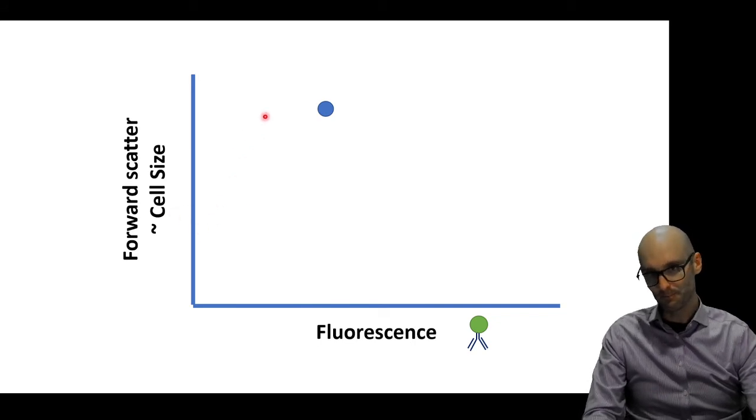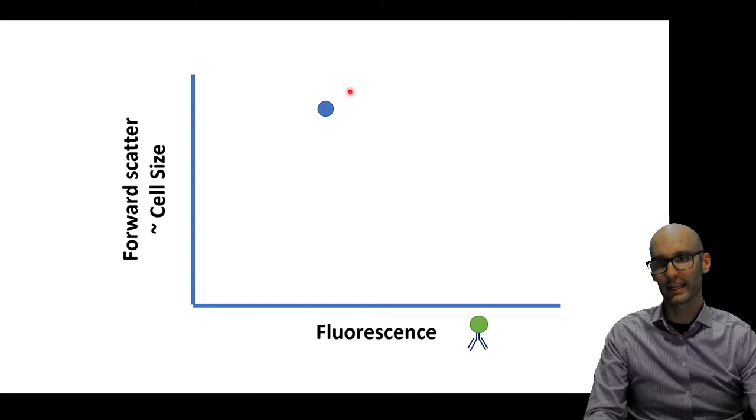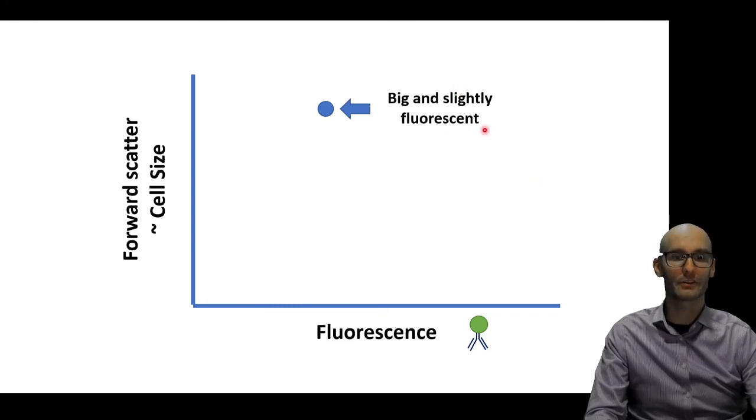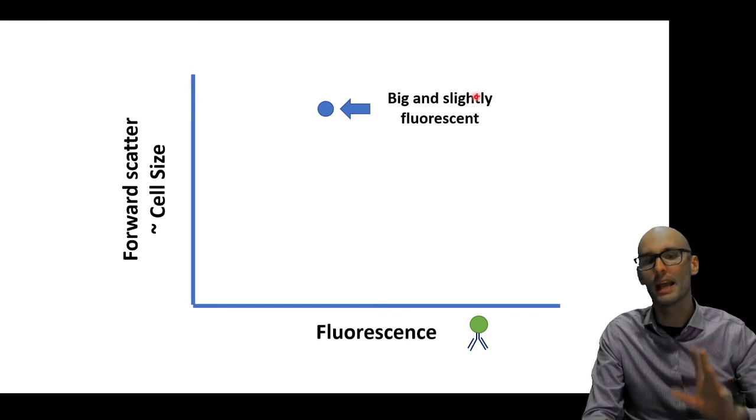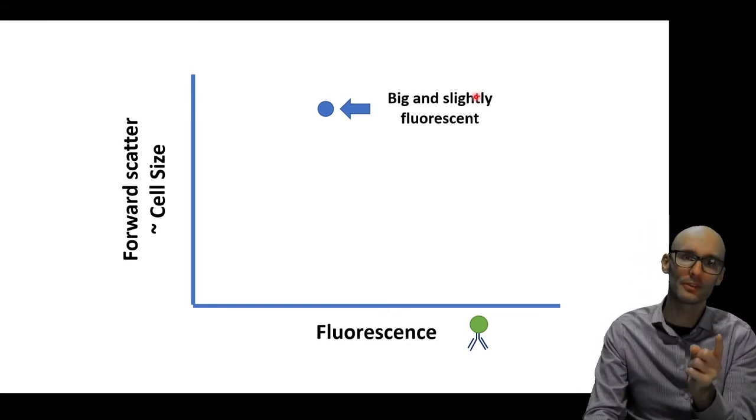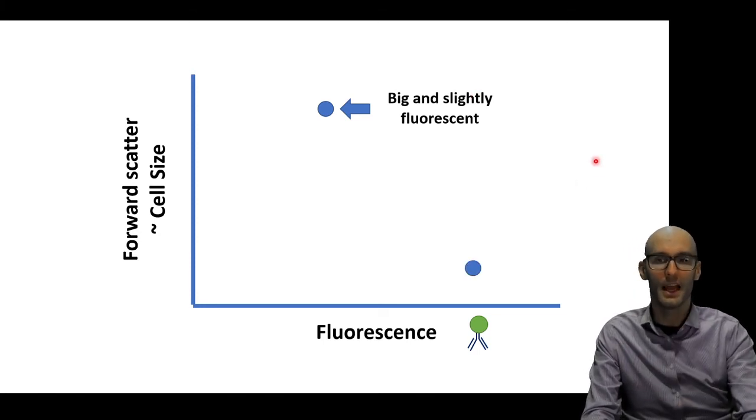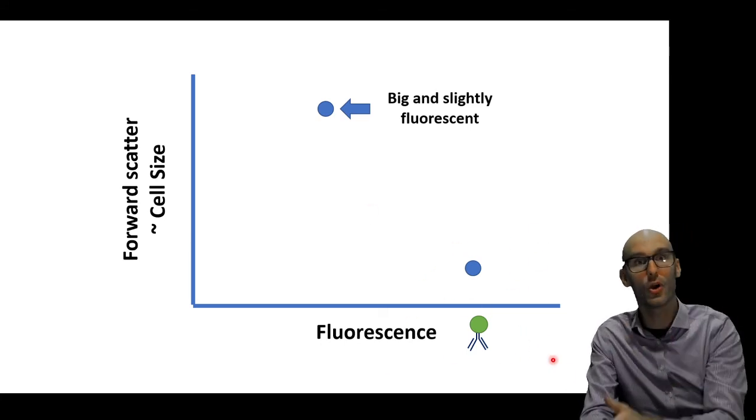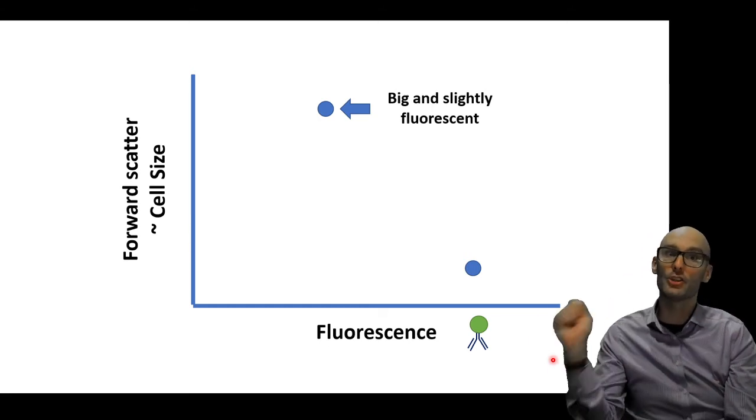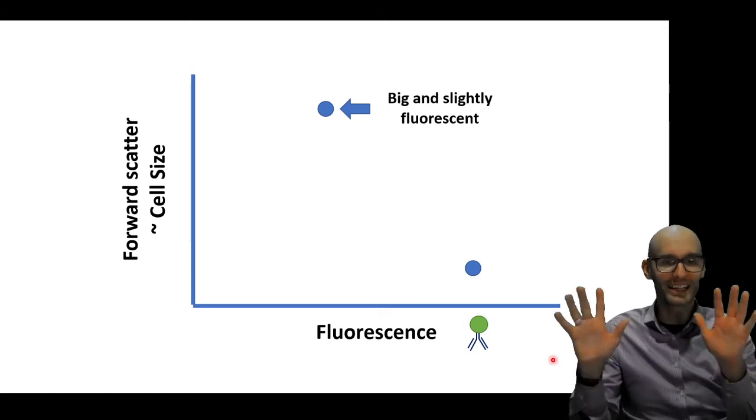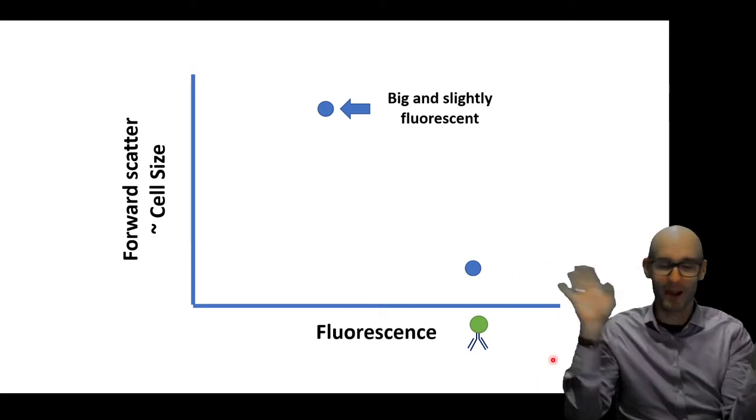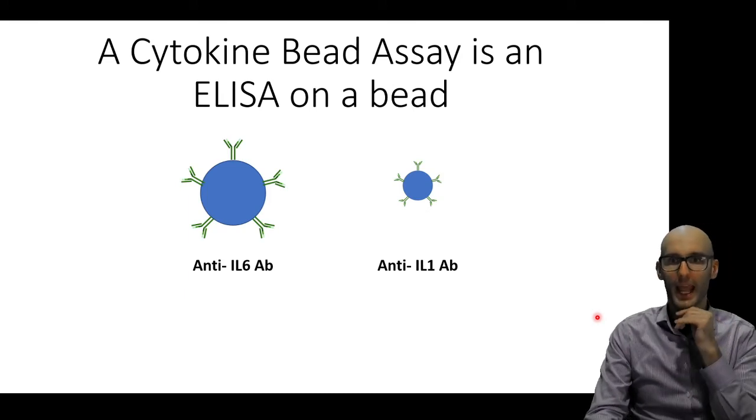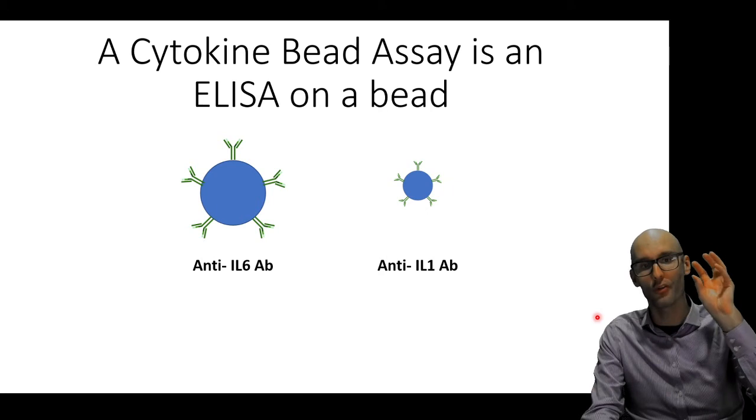So now we can run that on that same graph here. Here we've got a point that's very high, so it's got a very large cell size, and that's because it was on the big bead. So it's big and slightly fluorescent, so we know that there's some IL-6. Not a huge amount, but we know because the bead was big, that's IL-6, and it didn't fluoresce that much, so we've got some IL-6. The IL-1 bead is small, so we know that this is the IL-1 bead here, and it had loads of fluorescence, so we know that there was loads of IL-1 in this person's plasma, but not a lot of IL-6 in this plasma. So it's small and highly fluorescent, so we know that there's lots of IL-1. So essentially, you can see it's basically an ELISA on the surface of a bead.